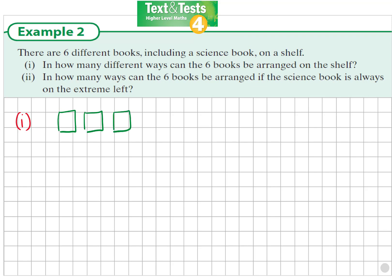There's six books and six spaces and what we're going to consider is how many choices do we have for each of these positions. If we first think about the first position here, we have six different books and any of them could go here.